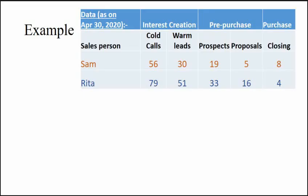This example shows estimates of each sales step for two salespersons, Sam and Rita, towards the end of April 2020. Sam has 56 cold calls, 30 warm leads, 19 prospects, 5 proposals, and 8 closed deals at the time. Similar figures for Rita are also included.